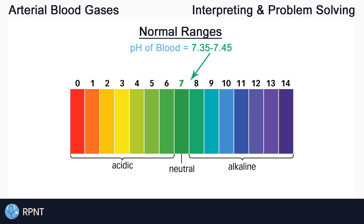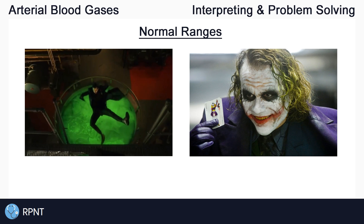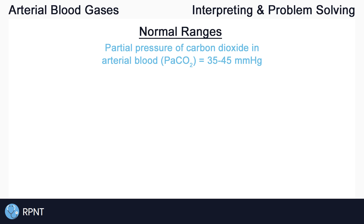Someone once told me a trick that helped me remember pH — think of the scene from Batman where Joker falls into a pit of acid. I always think of falling into a pit of acid to remember that as pH falls, the solution becomes more acidic. Next, we have PaCO2, which is the partial pressure of carbon dioxide in the blood. The normal range for PaCO2 is 35 to 45 mmHg. I always write PaCO2 right under my pH because then you have 7.35 to 7.45 and 35 to 45.